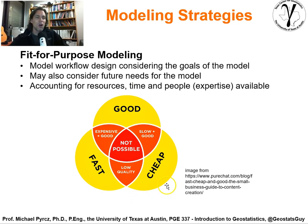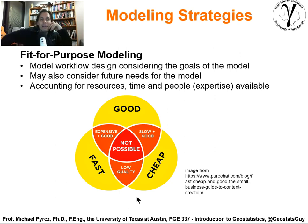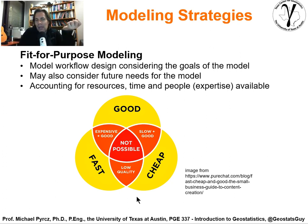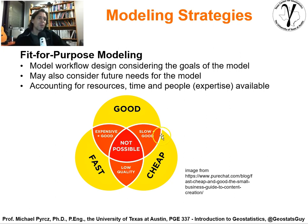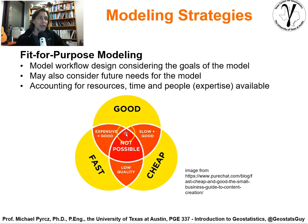We can refer to the commonly expressed project management figure of competing aspects of a project outcome: good, cheap, and fast. The common saying is that we can only pick two. You can have good and cheap but it's going to be slow. You can have good and fast but it's going to be expensive. You can have fast and cheap — that's just low quality. If you ask for all three, you typically cannot have that.